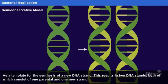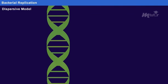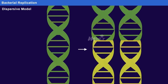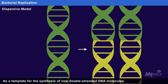Dispersive model. In this model, the parental double helix is broken into double-stranded DNA segments that act as a template for the synthesis of new double-stranded DNA molecules.